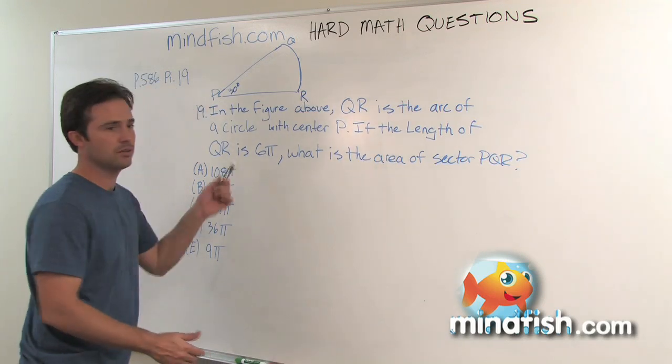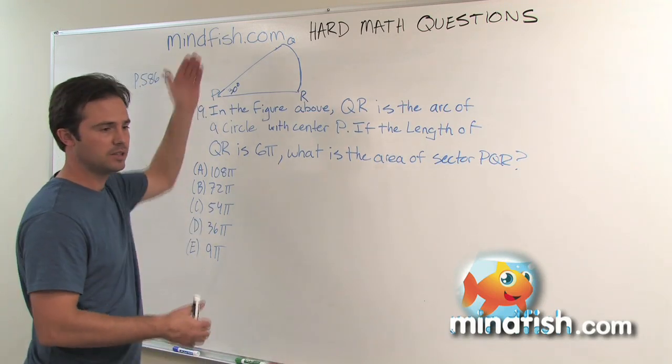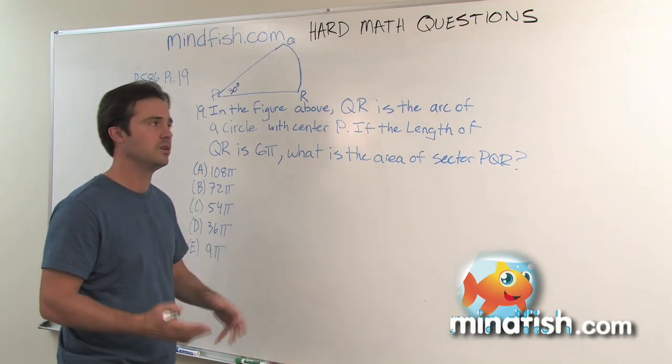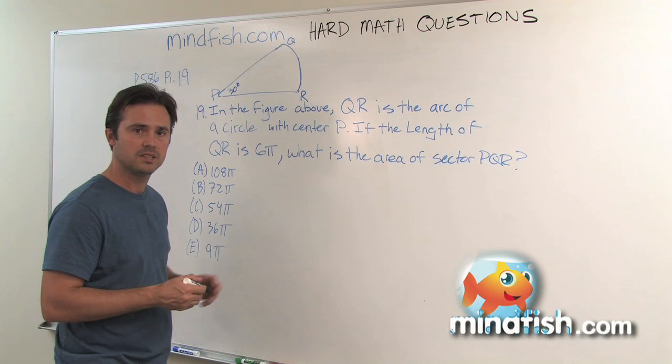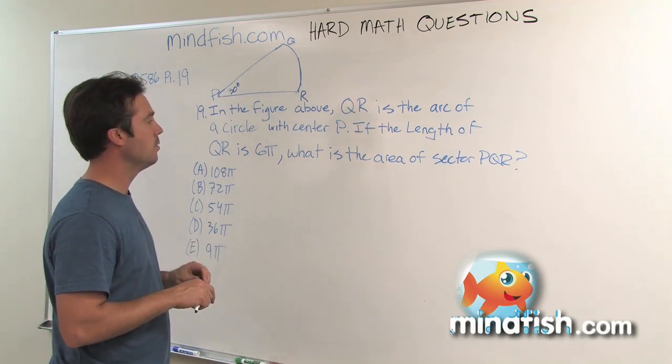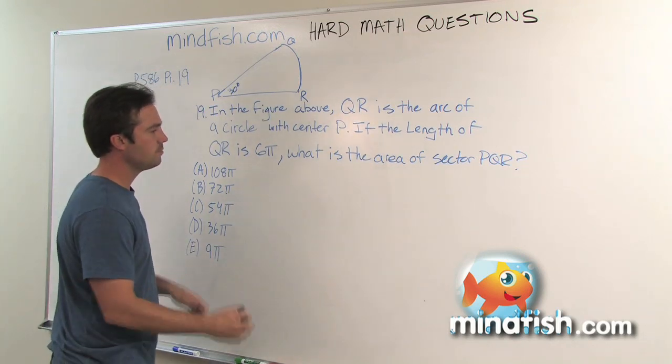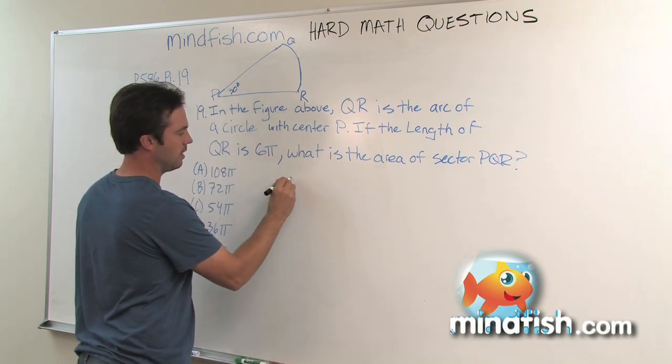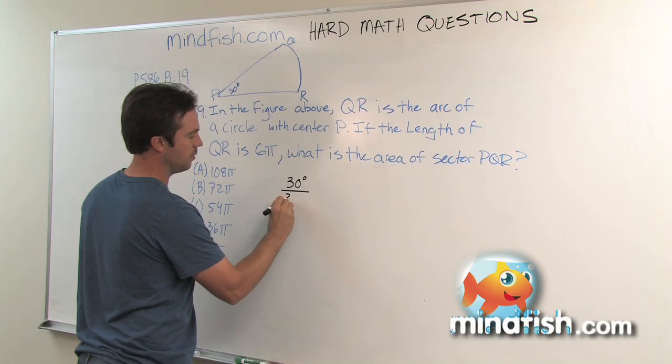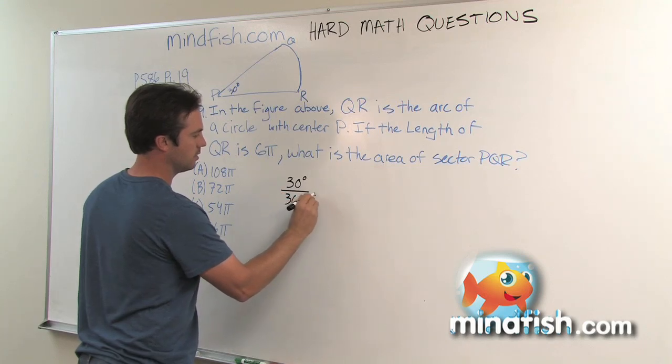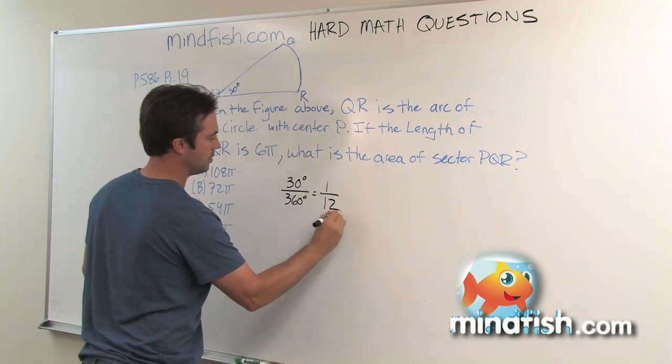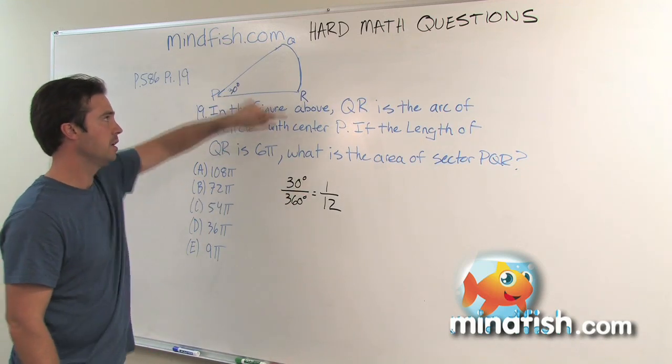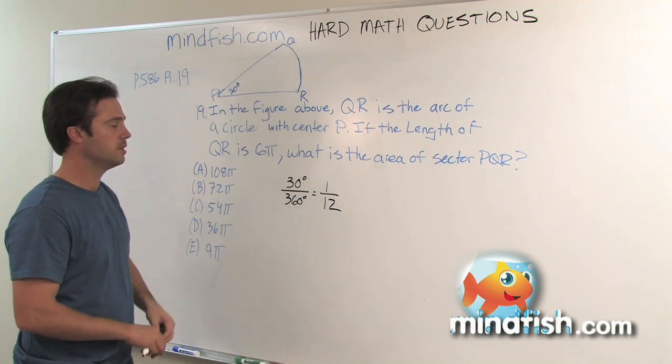This is a sector of a circle question. If you go to mindfish.com and check out our circles video and look at the sector of a circle, that's really where we address this. The idea here is that a sector of a circle, the angle of that sector determines the fraction of the circle that it represents. The fact that this is 30 degrees tells you that it's 1/12th of a circle because the circle has 360 degrees.